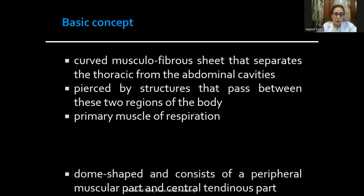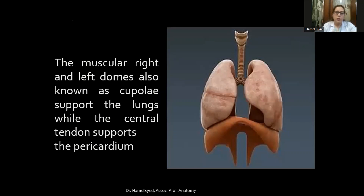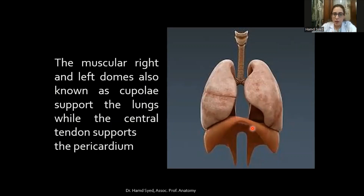The diaphragm is also the primary muscle of respiration. Regarding shape, it is dome-shaped — rounded in two parts. These two domes form the peripheral part of the muscle, whereas the central uniting portion is called the central tendon. Here in this simple diagram, you can see the right dome and the muscular left dome. These domes are also called the cupolae of the diaphragm, and the central tendon supports the pericardium surrounding the heart.